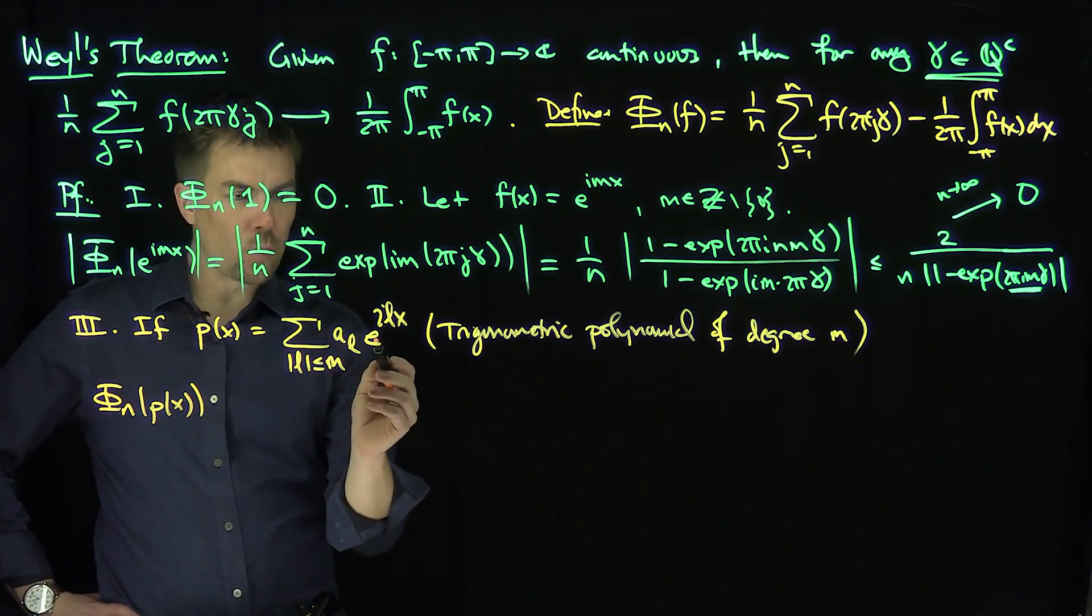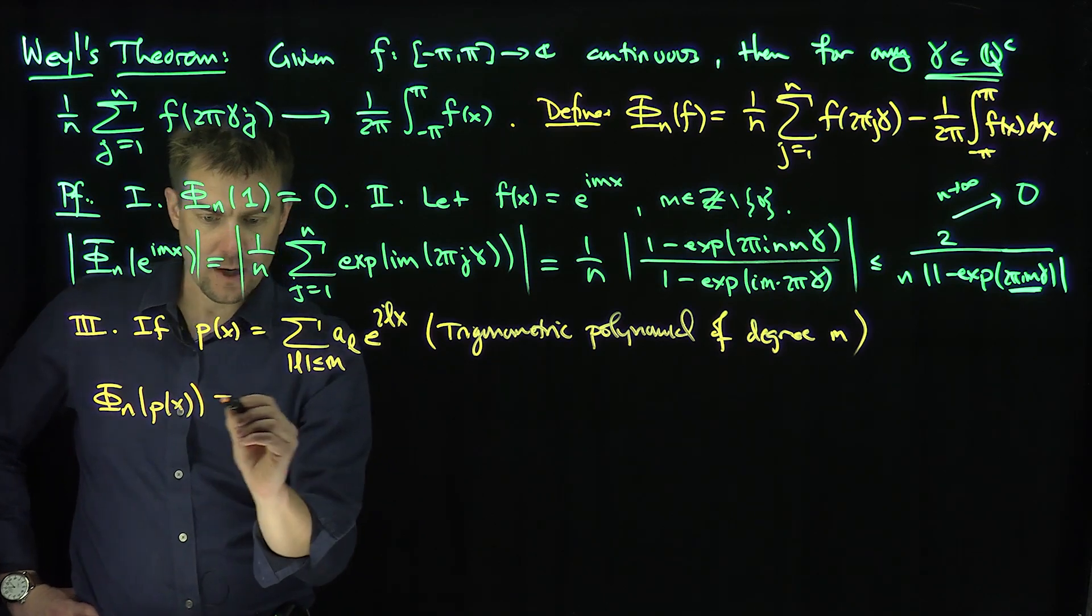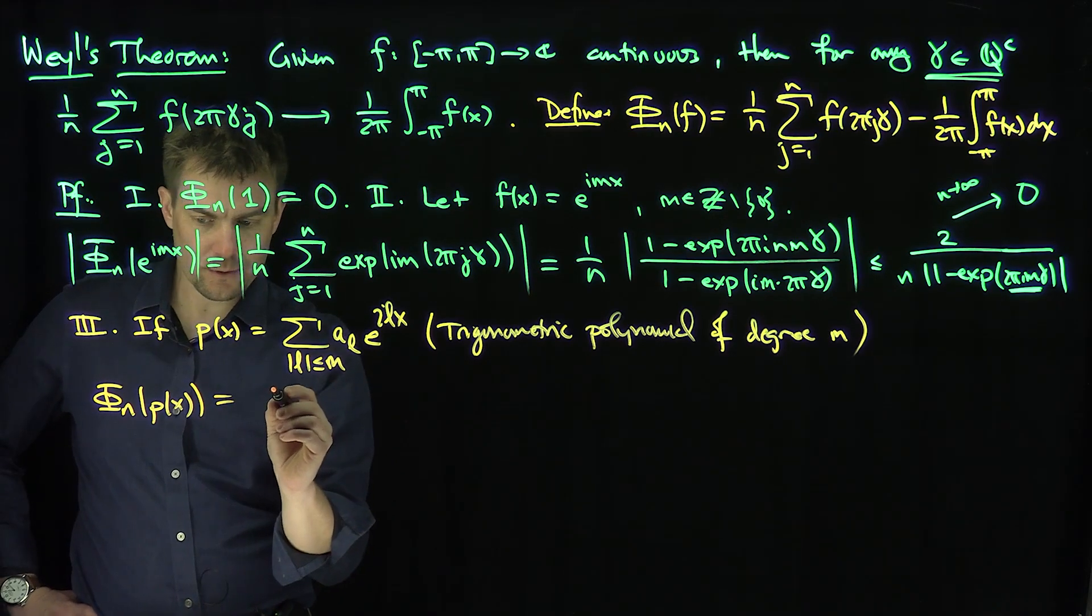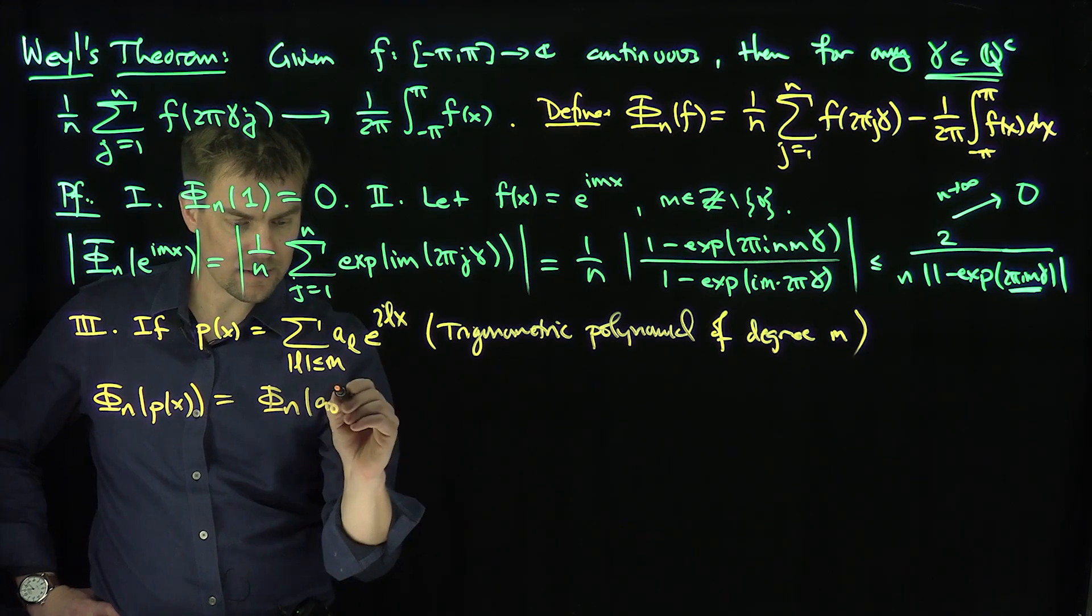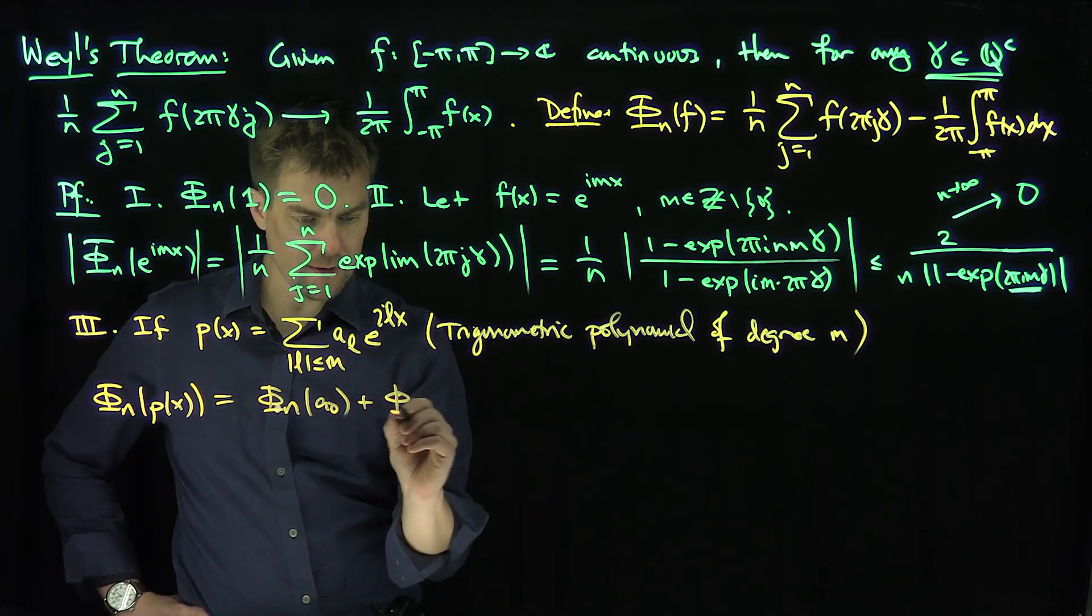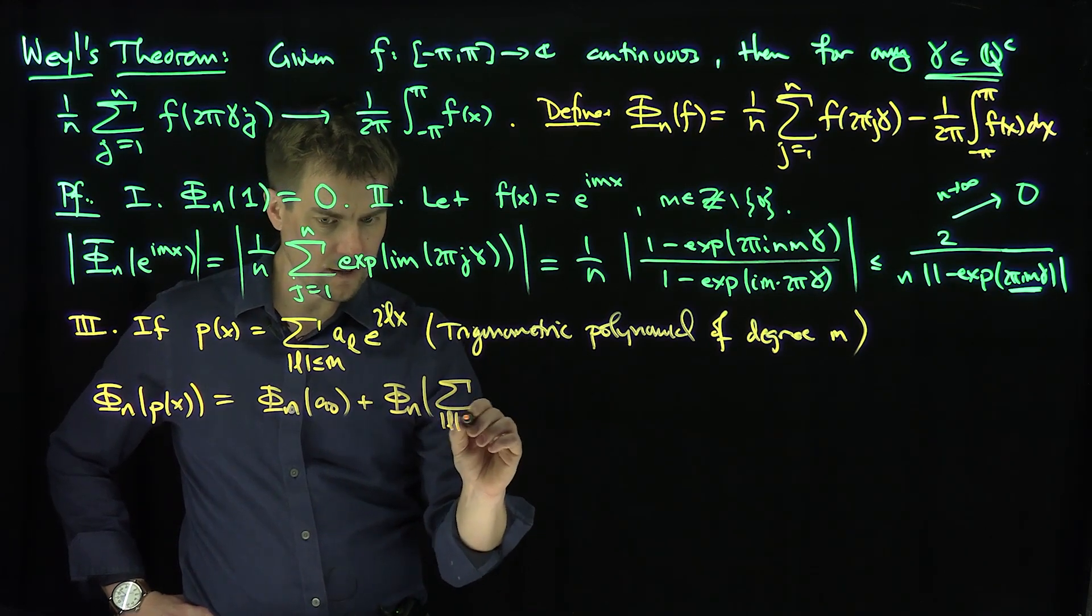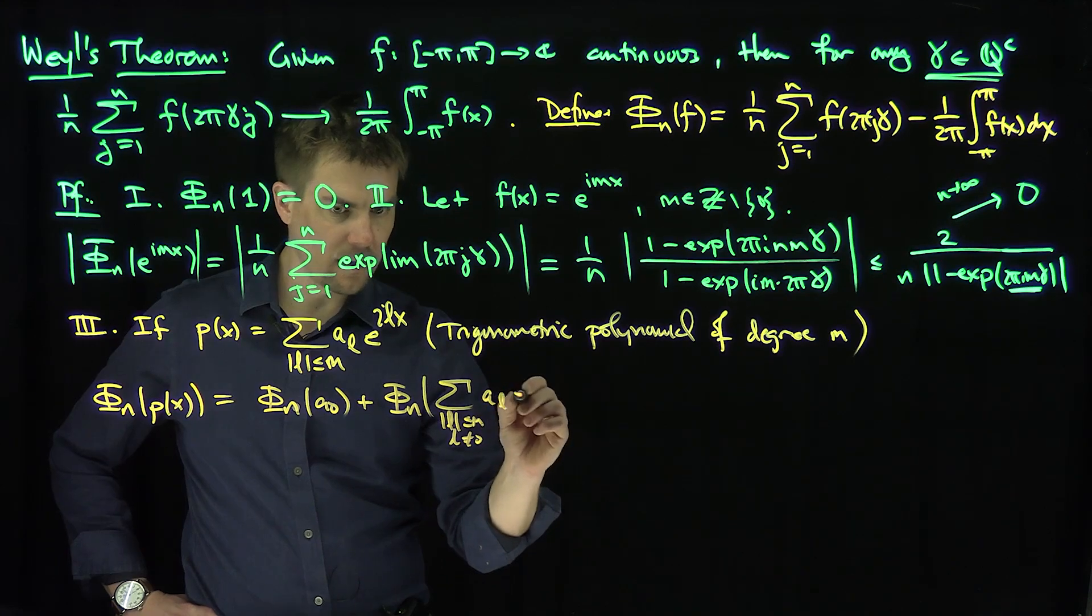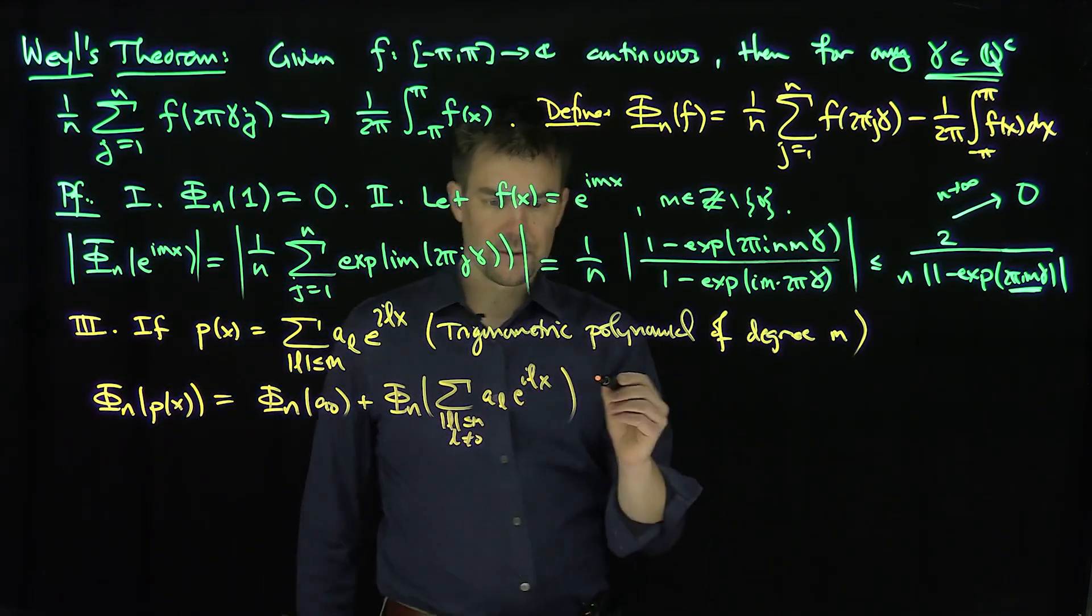Well, when l is equal to zero, that's going to correspond to, by the linearity of this thing over here, we're going to get zero for the zero term, φ_n of a_0, which is going to be zero, plus φ_n of the sum over l less than or equal to m, l not equal to zero, of a_l e to the ilx, right?